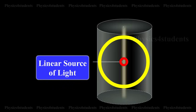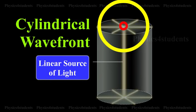A linear surface of light such as a slit illuminated by a lamp will give rise to cylindrical wavefront.